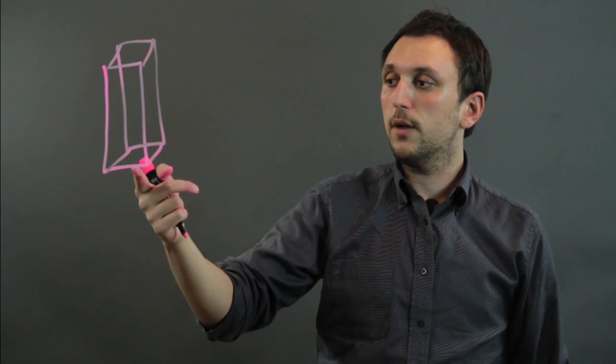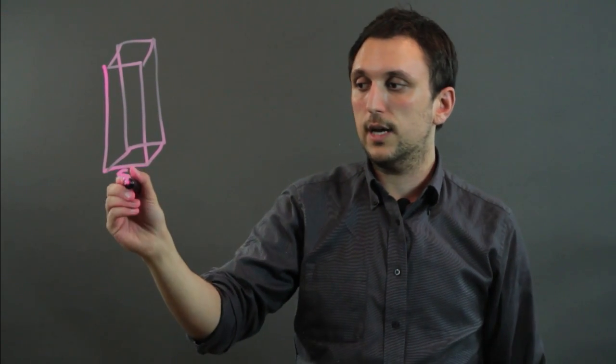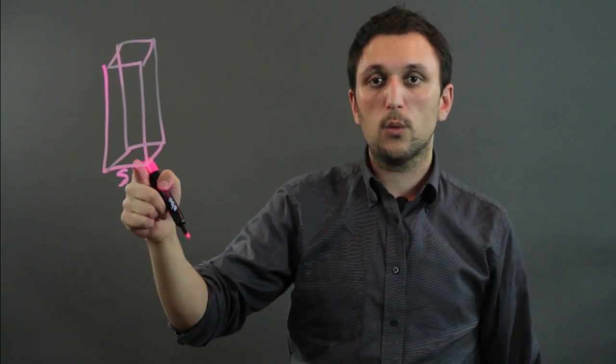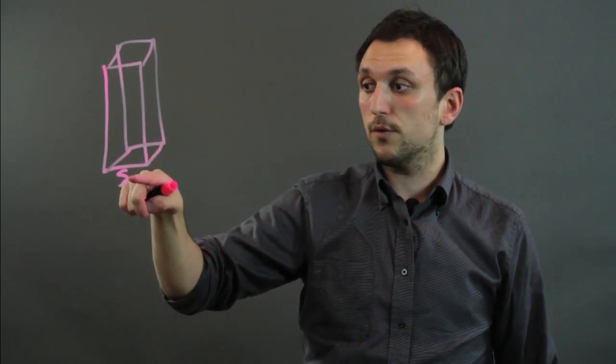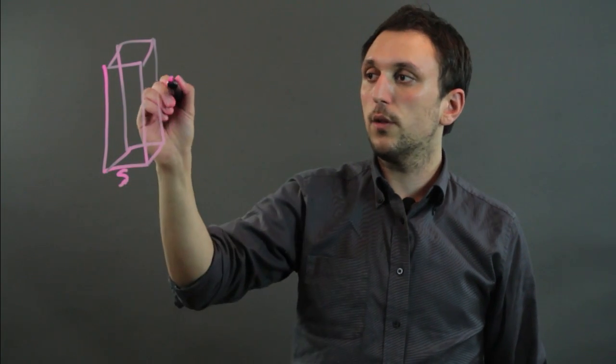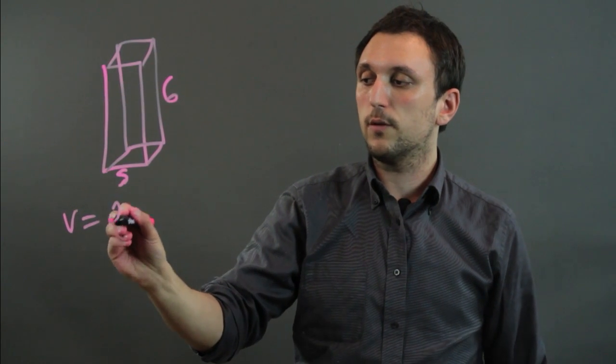Now if we don't know the base edge length, also called the side here, then we would need to know other things in order to find this. So let's say we know that the height is 6 and that the volume equals 24.